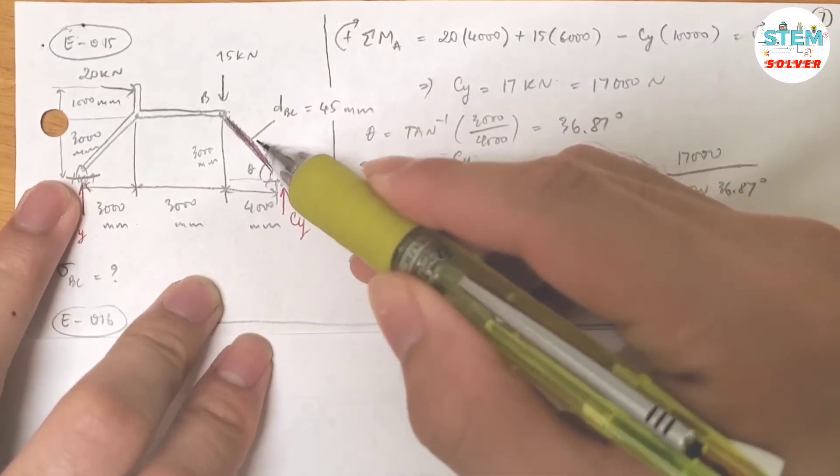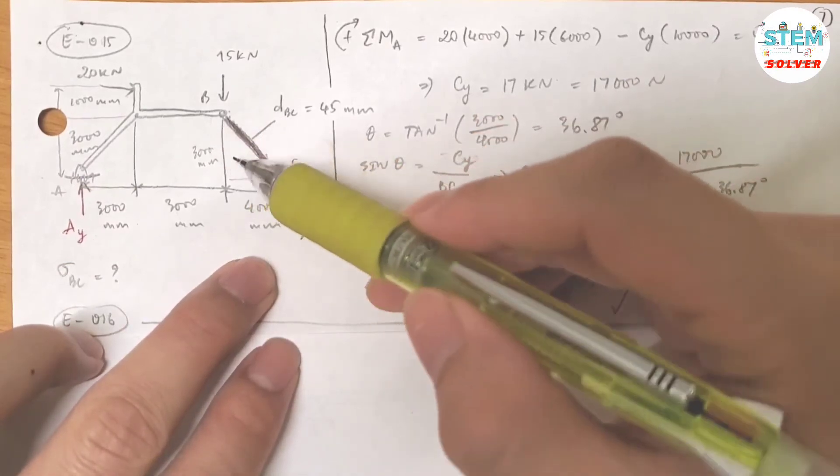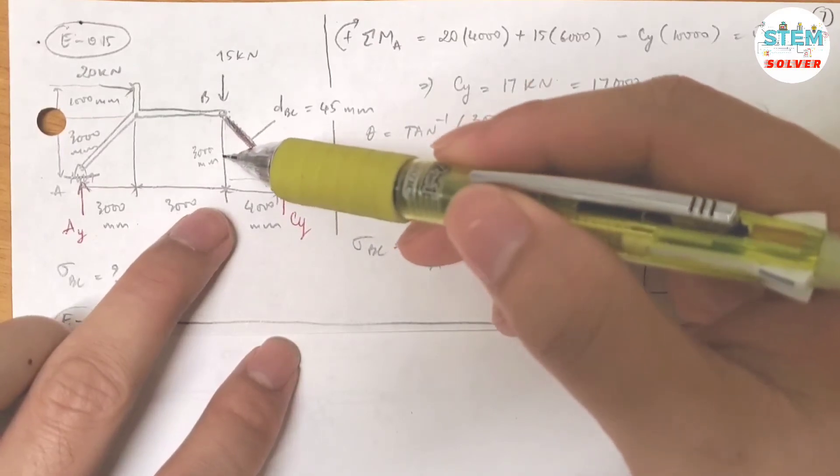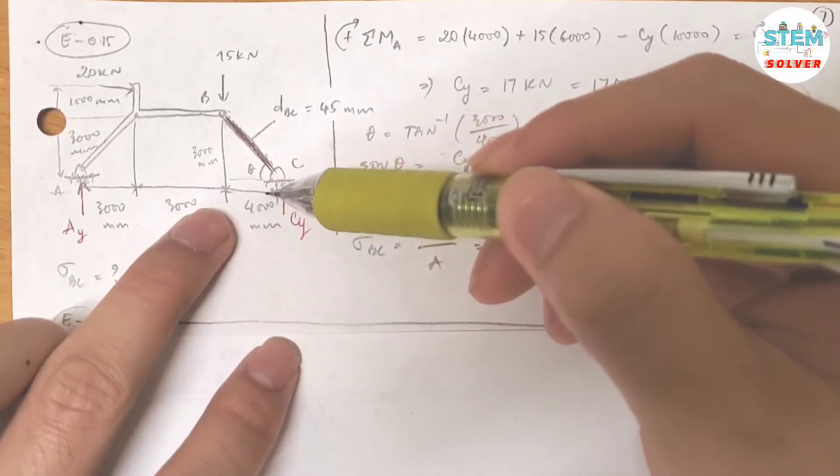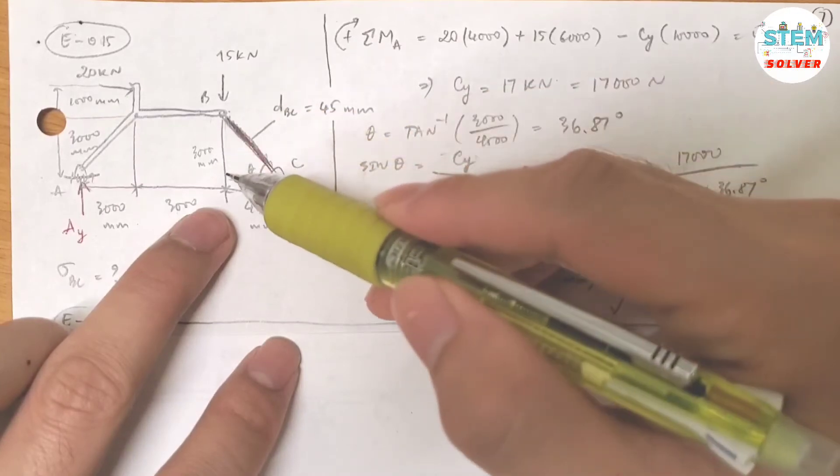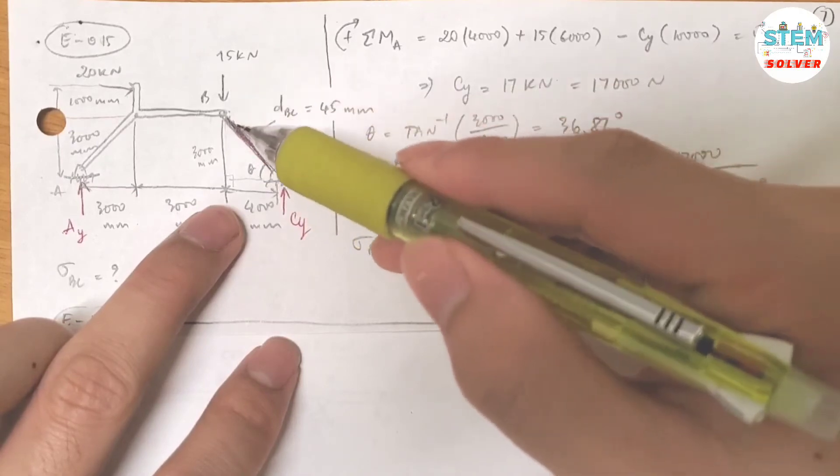Now let's find the angle between member BC and the horizontal line. So you know from this triangle the horizontal distance, which is 4,000, the vertical distance, which is 3,000, and this is the right angle, so you can use Pythagorean theorem to solve for...